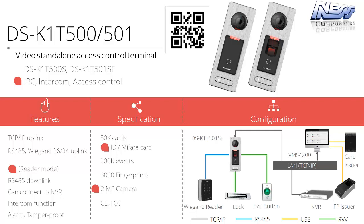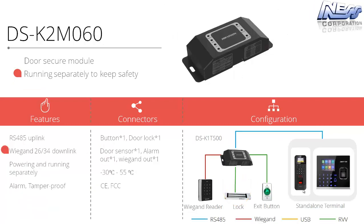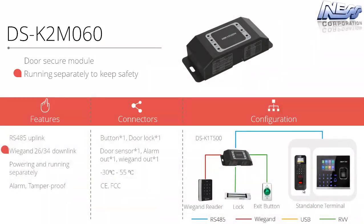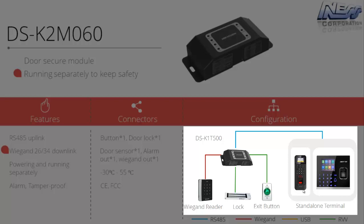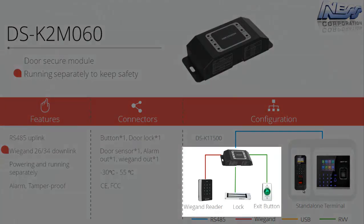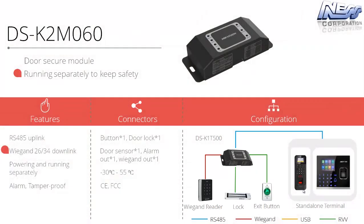With all terminals and intercom door stations that have a relay output to unlock a door strike, there is a concern that if the terminal is removed from the wall, someone could short the relay contact or press the exit button to unlock the door. To address this, there is a door secure module that communicates with the terminal or intercom door station via encrypted RS-485. From this secure module — located on the secure side of the door — there is a lock output, an input for exit buttons, and an input for additional card readers, keeping everything secure on the secure side of the door.